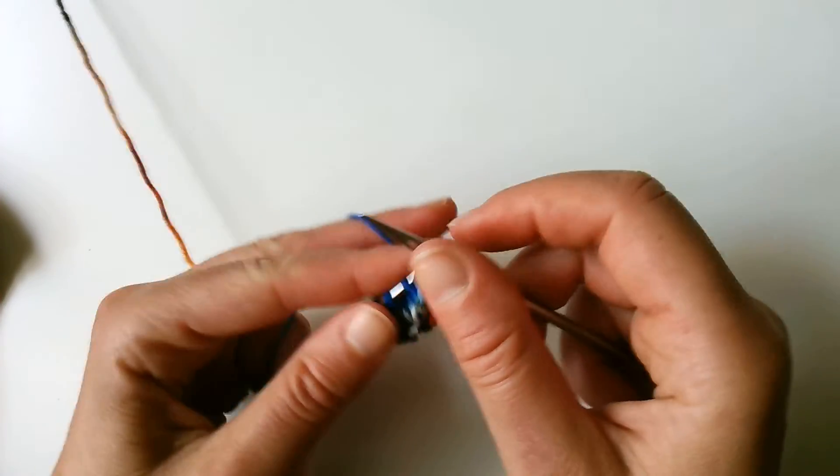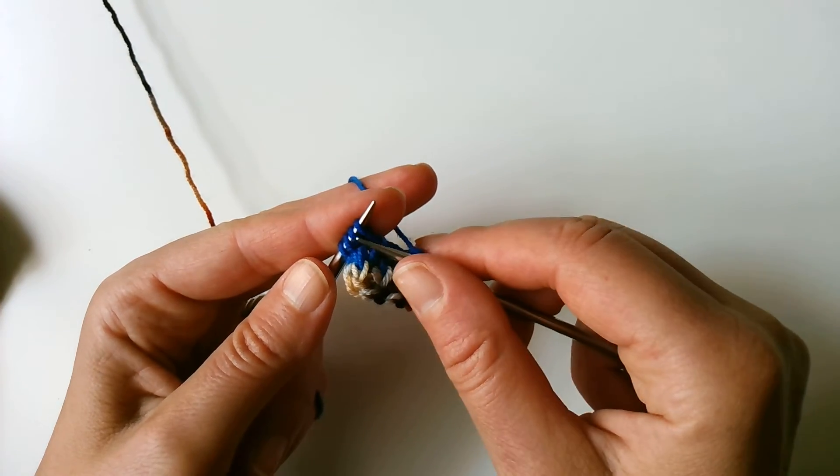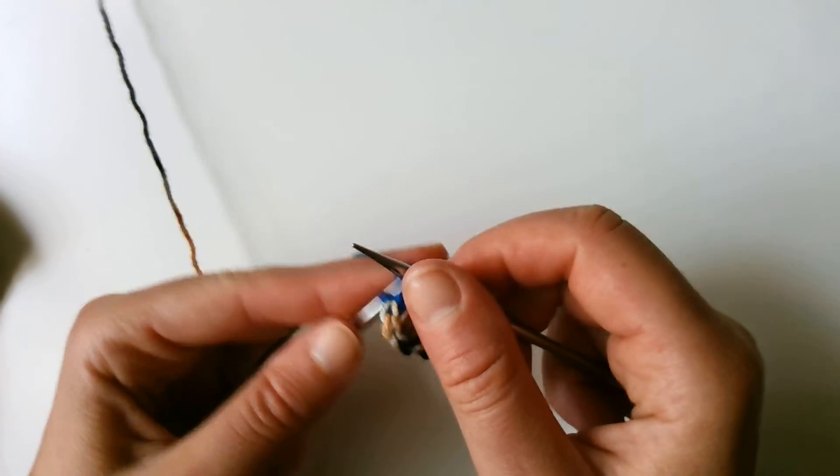And then the decrease is just to knit two together. So when you have four stitches left on your needle, then knit two together and knit the last two for the I-cord edging.